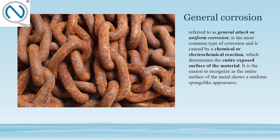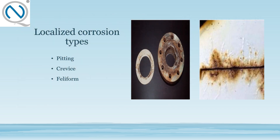General corrosion deteriorates the entire exposed surface of the metal and is the easiest to recognize, as the entire surface shows a uniform sponge-like appearance. If you look at the micro level, you can see this sponge-like appearance clearly.